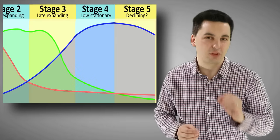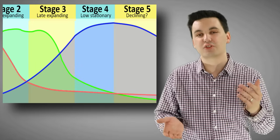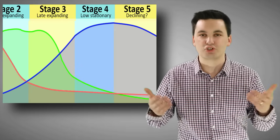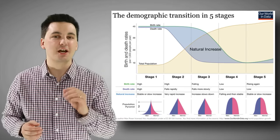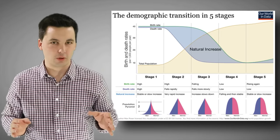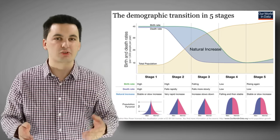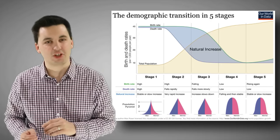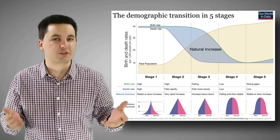There's also a debated fifth stage where deaths actually rise above births and population begins to decrease. Understanding this model is key to understanding societies around the world — it helps us understand economic and social opportunities, migration patterns, and urbanization. Another model to review is the epidemiologic transition model, which follows the demographic transition model and looks at causes of death in each stage. For the most part it lines up with the DTM, though stage five shows some variance.